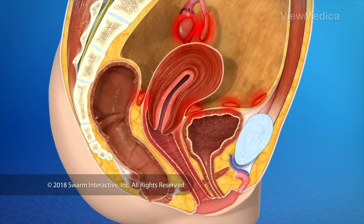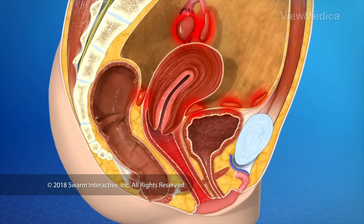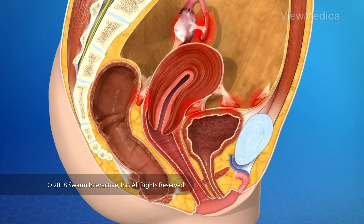Even though it is not in your uterus, it still thickens and breaks down during your menstrual cycle. Because the broken down tissue cannot leave your body, it can form cysts and scar tissue.